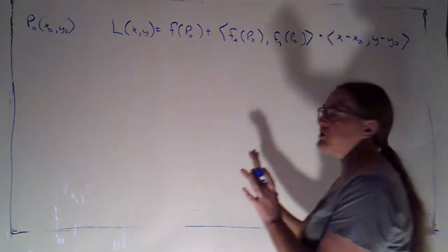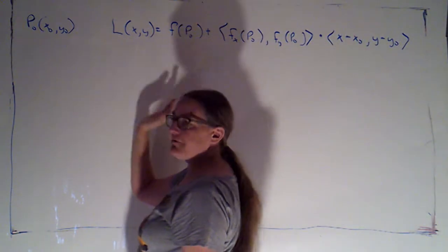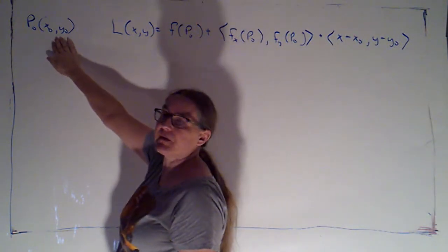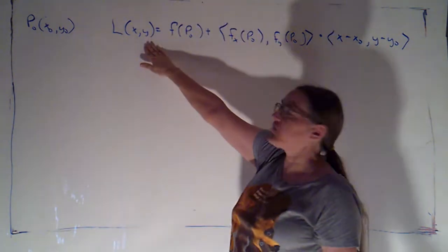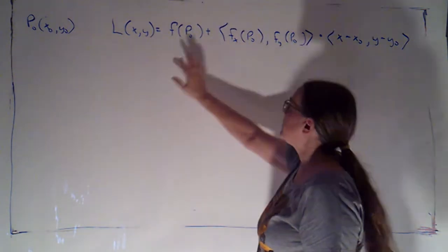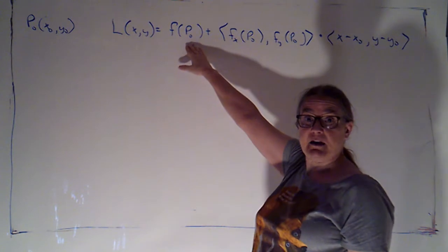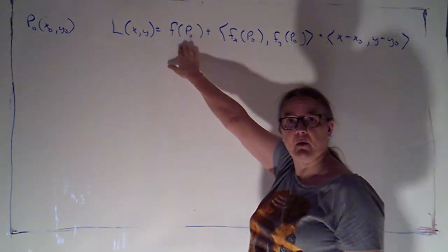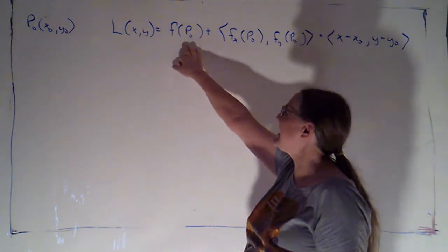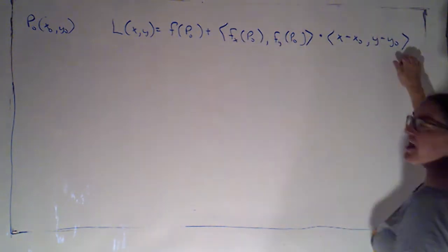So we said if I'm in two space and I have a function f of xy and a point p naught in its domain, then I can construct this linear function, which is just f evaluated at p naught, so that's the z value at what I hope to be able to call the point of tangency, plus some change in the z.